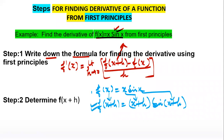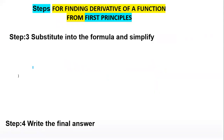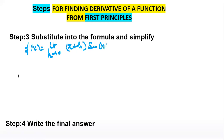Now substitute the values of f(x) and f(x+h) into the equation. f'(x) = lim(h→0) [(x+h)·sin(x+h) - x·sin(x)] / h.